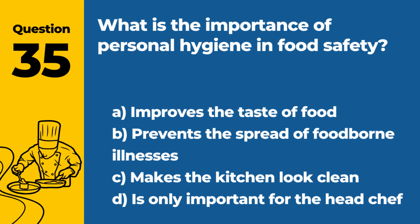Question 35. What is the importance of personal hygiene in food safety? a. Improves the taste of food. b. Prevents the spread of foodborne illnesses. c. Makes the kitchen look clean. d. Is only important for the head chef. Answer b. Prevents the spread of foodborne illnesses. Personal hygiene is crucial in food safety as it helps prevent the spread of foodborne illnesses through proper hand washing, clean clothing, and minimizing direct contact with food.